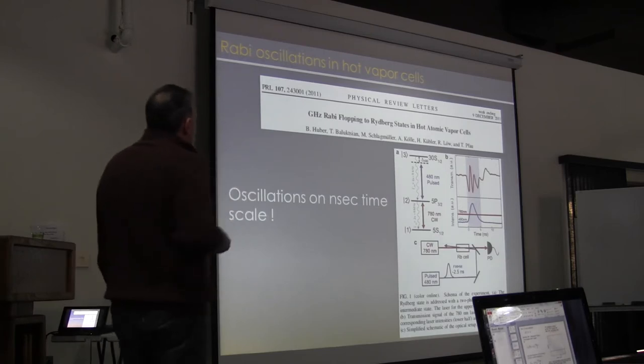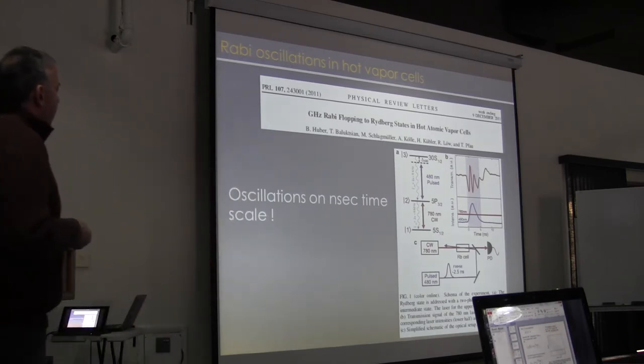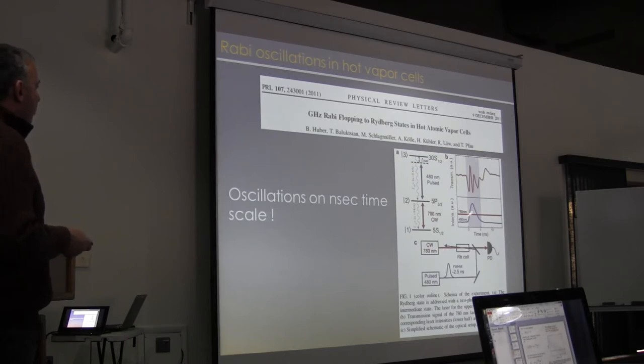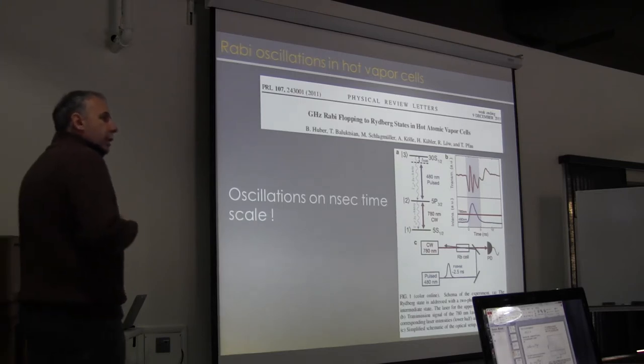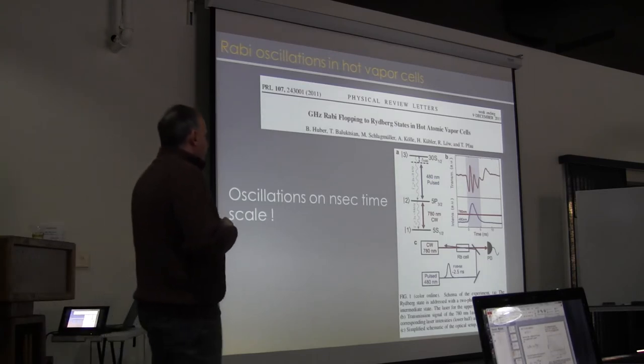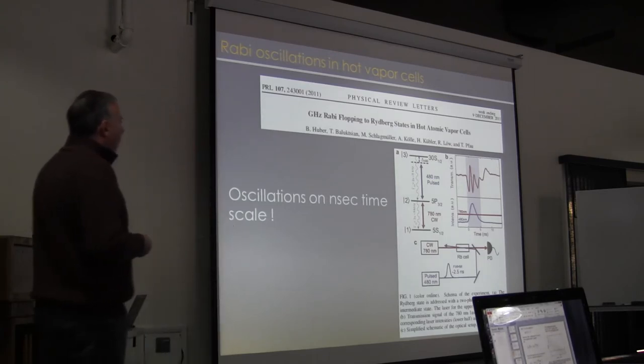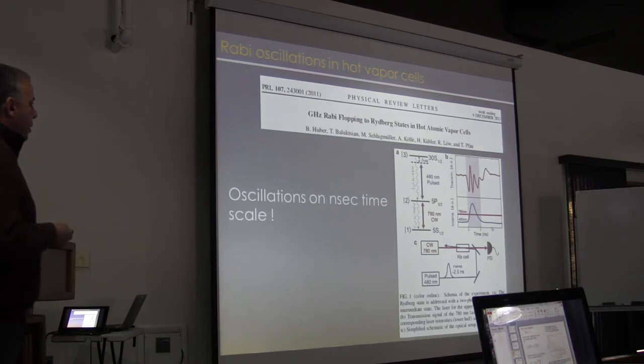You can also see time-domain oscillations in much hotter gases, as this work from the Stuttgart group, using very high-intensity pulsed lasers, giving oscillations on nanosecond timescale. If the oscillation frequency is fast compared to the Doppler spreading, then you can see oscillations despite the Doppler effect, and you see that here on the nanosecond timescale, where the transmission through the cell is oscillating here on a couple nanosecond scale.